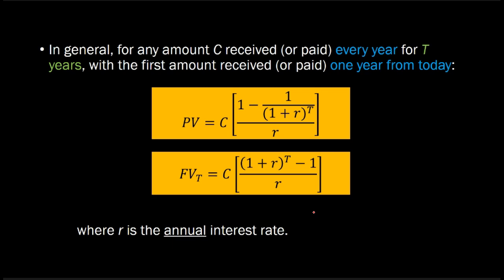So let's suppose that our uncle comes out and says, I am going to give you some dollar amount C one year from now, I'm going to give you the same dollar amount C two years from now, and I'm going to do this for some number of years, T.